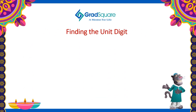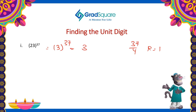In this example, 23 is raised to the power 37. By applying the cyclicity concept, we are able to find the unit digit of the given expression. The cyclicity of 3 is 4. Hence, 37 when divided by 4, the remainder will be 1. So this is ideally equal to 3 power 1, which is equal to 3. So the resultant will have 3 as the unit digit.